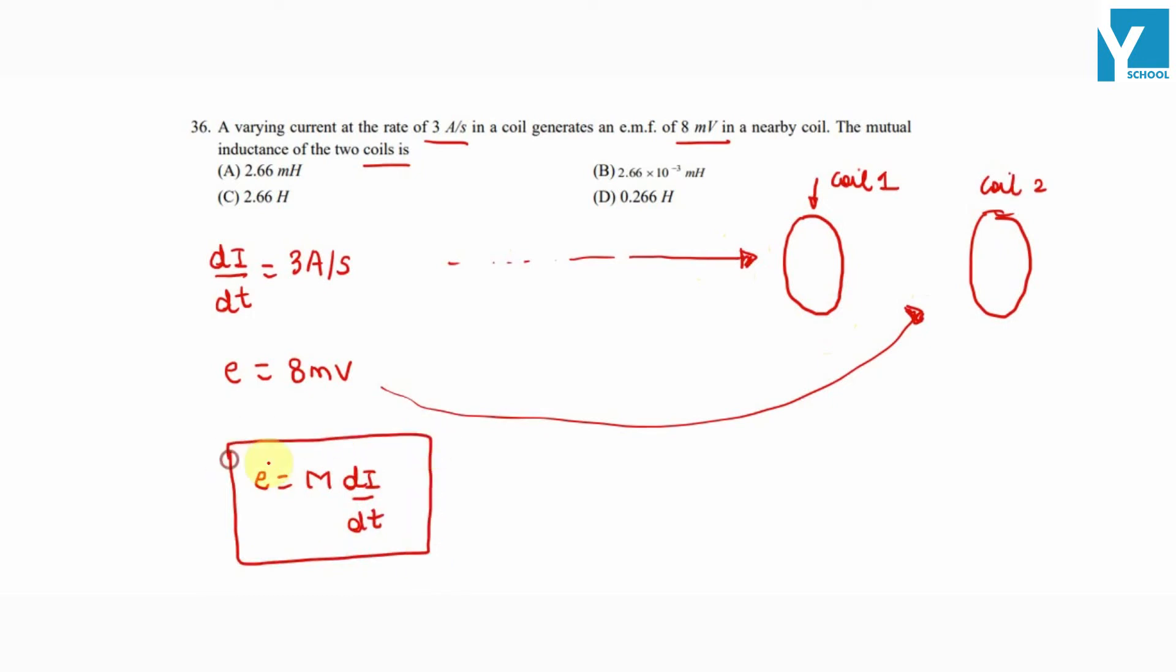8 millivolts, which is 8 times 10 to the minus 3 volts, equals M times di/dt which is 3. This implies M comes out to be 2.66 millihenry. Looking at the options, option A is the right answer.